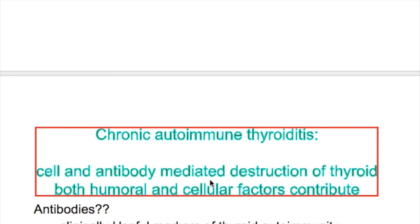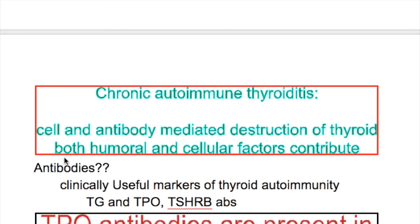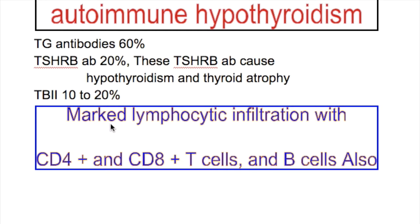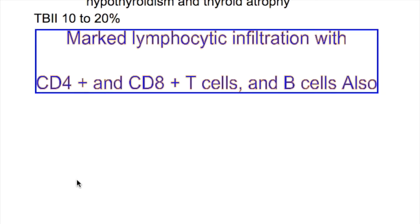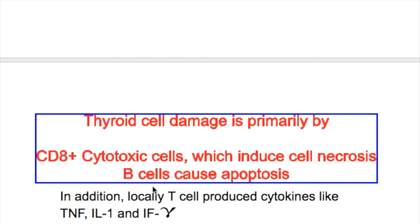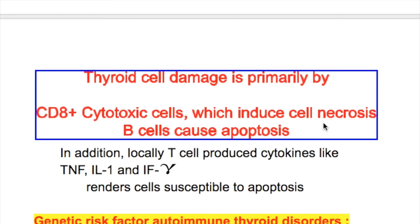Chronic autoimmune thyroiditis has both cell and antibody-mediated destruction of the thyroid. Both humoral and cellular factors contribute to thyroid destruction. In Hashimoto's thyroiditis there is marked lymphocytic infiltration with CD4 and CD8 T-cells and B-cells. Thyroid cell damage is primarily by CD8 cytotoxic T-cells, which induce cell necrosis, while B-cells cause apoptosis. Locally, T-cells also produce cytokines like tumor necrosis factor, interleukin-1, and interferon-gamma, rendering cells susceptible to apoptosis.